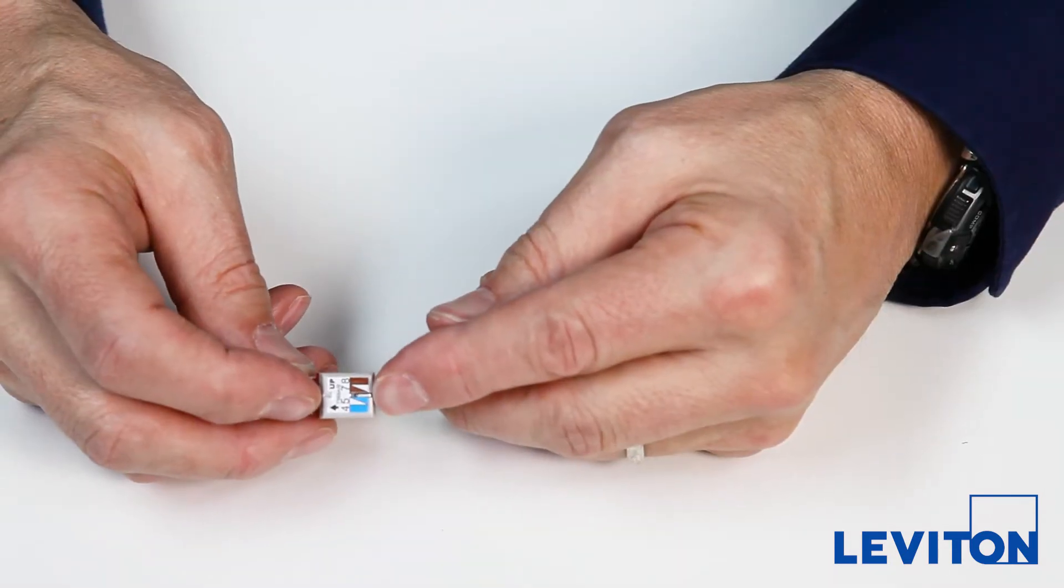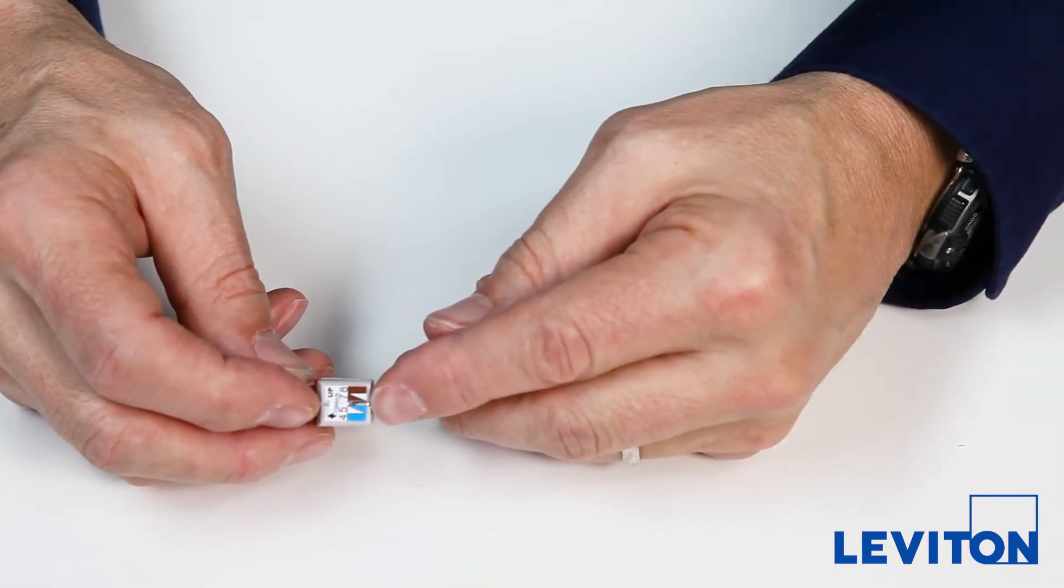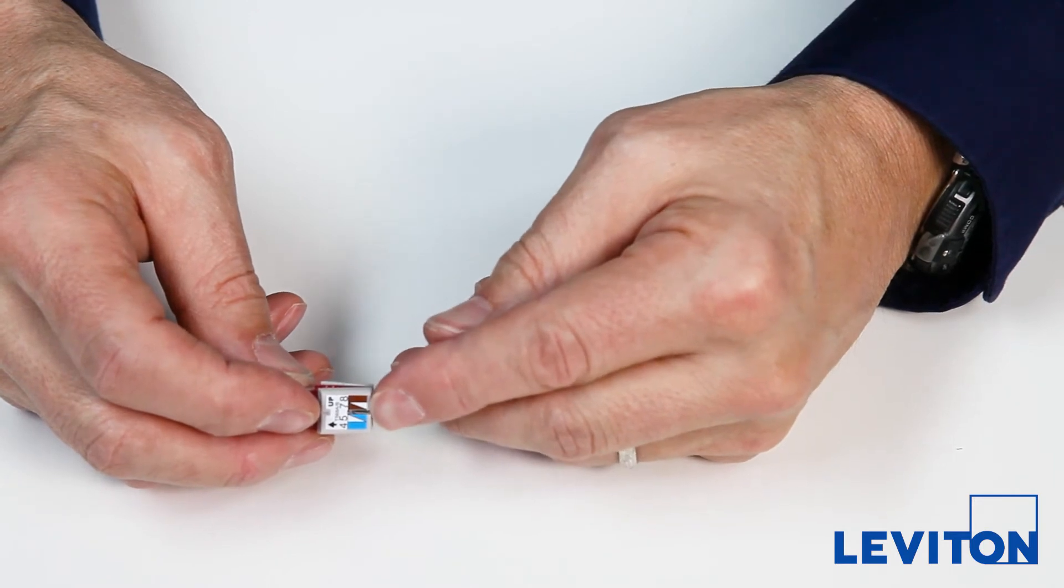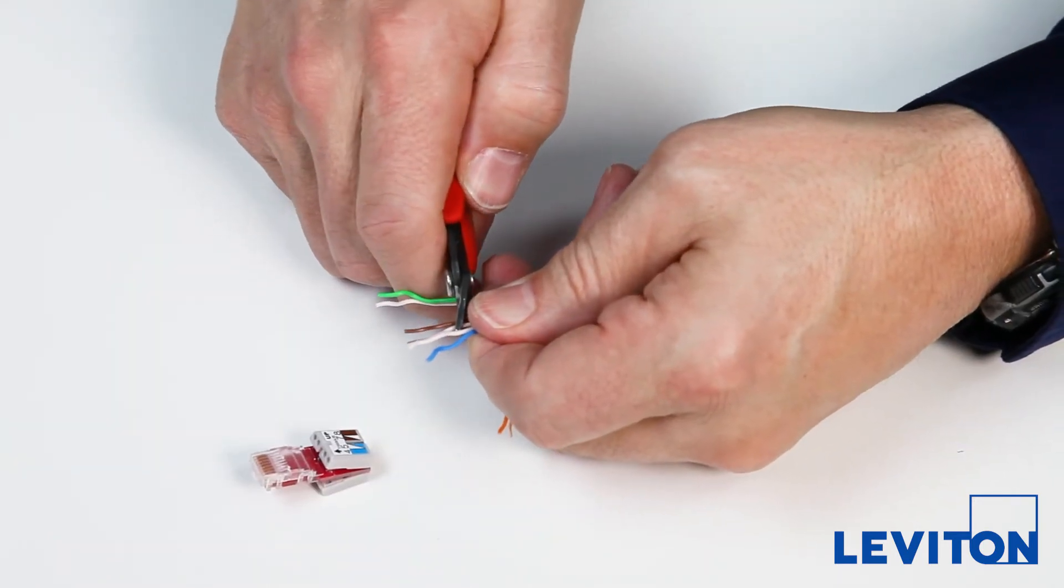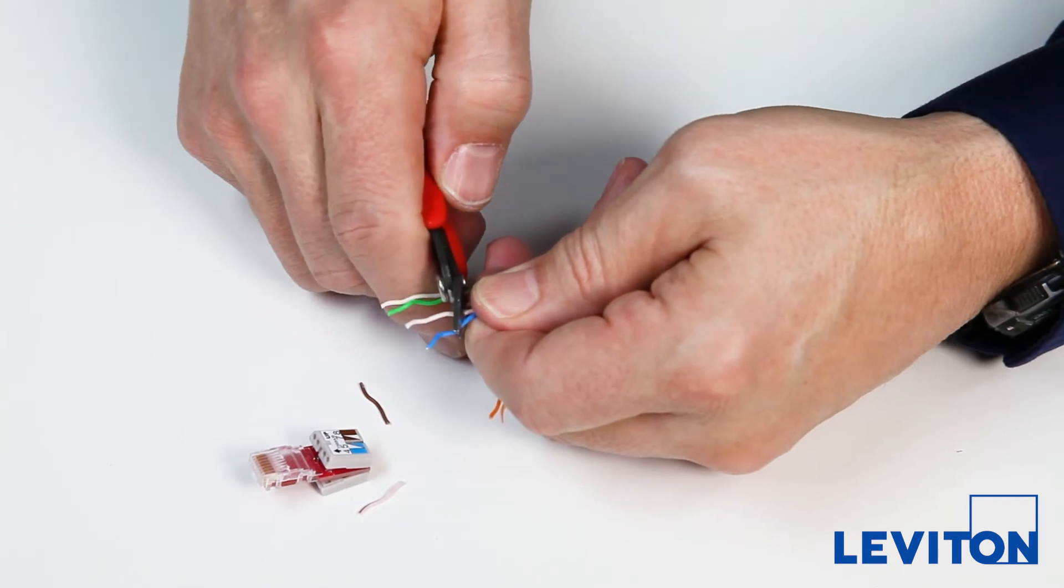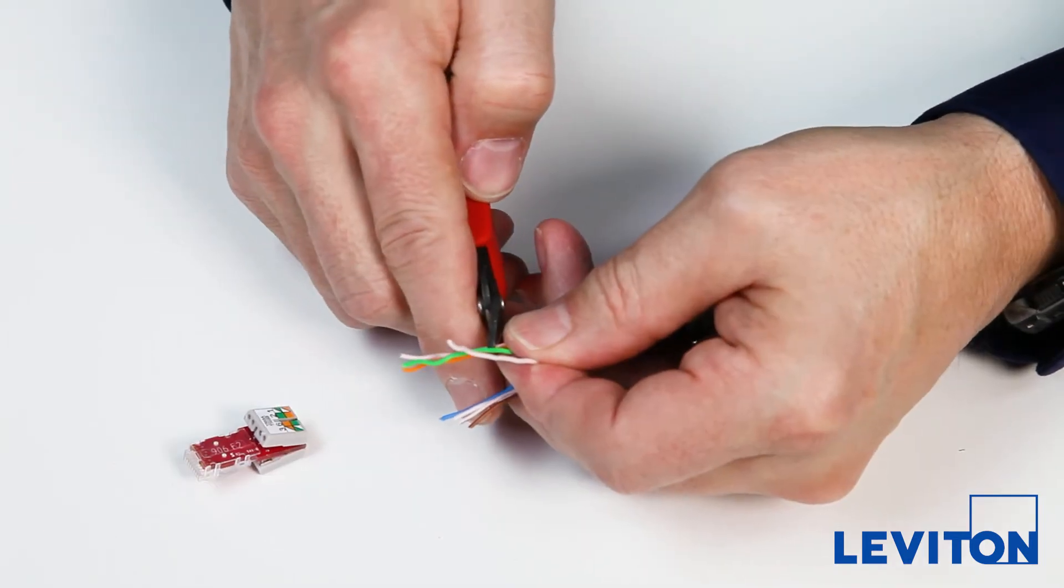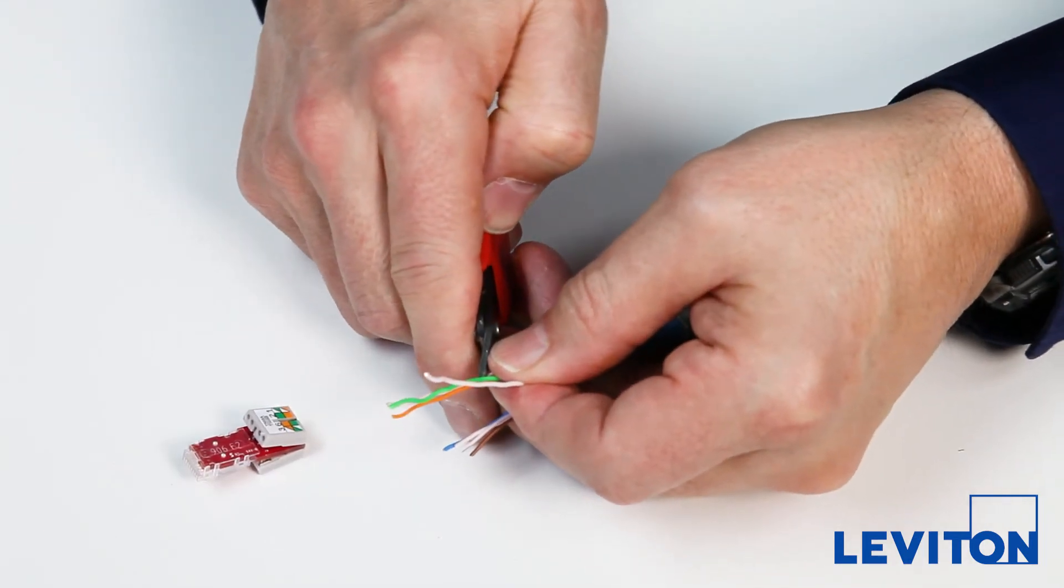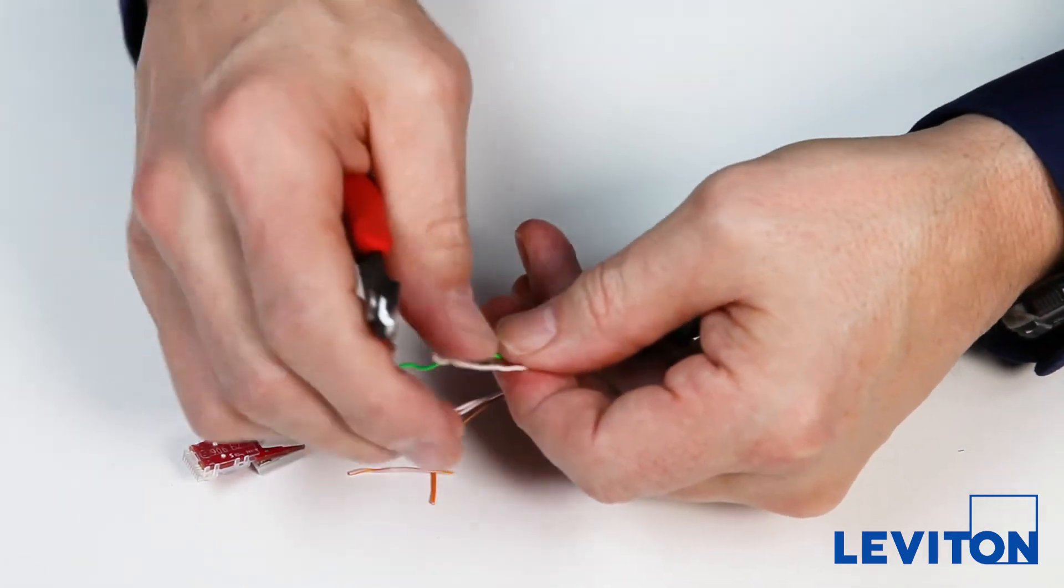We will be terminating using a T568B wiring method. To load the wire manager, start by trimming the ends of the blue and brown pairs at a slight angle. Then trim the green and orange pairs at an angle, cutting them shorter than the blue and brown pairs. This will make it easier to thread the wires into the wire manager.